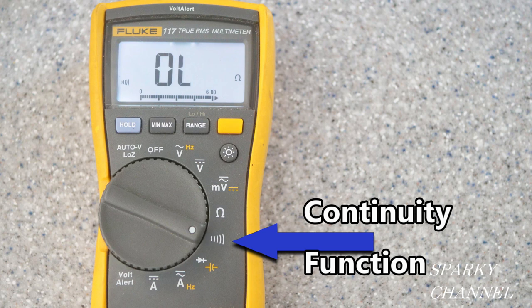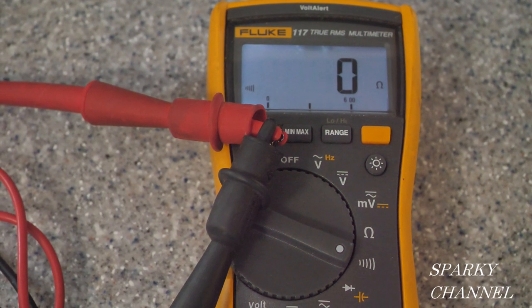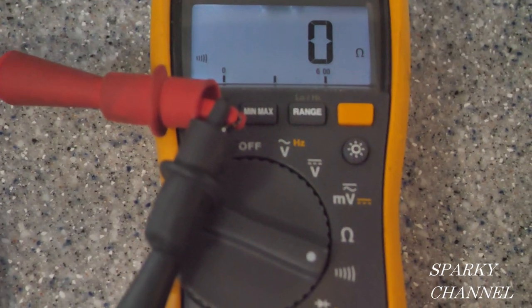You can use any meter that has a continuity function. This is the continuity function right here. You set your meter to that. It's got the little symbol of the sound waves because when you get continuity, it has an audible alarm. If you touch your leads together while on continuity function, it'll sound like this.